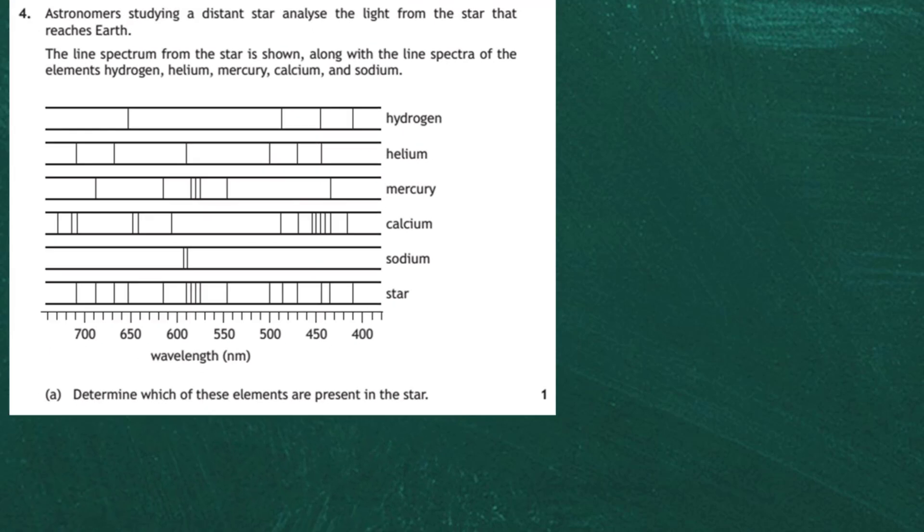Question 4 from the 2019 National 5 Physics Examination. Astronomers studying a distant star analyze the light from the star that reaches the Earth. The line spectrum from the star is shown along with the line spectra of the elements hydrogen, helium, mercury, calcium, and sodium. You can see them there in the diagram. There's the line spectra for the star at the bottom, and below you can see the wavelengths in nanometers, which is times 10 to minus 9 meters. Now for one mark you have to do a bit of work to determine which of the elements are present in the star.